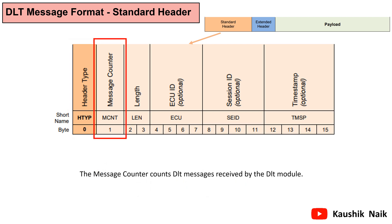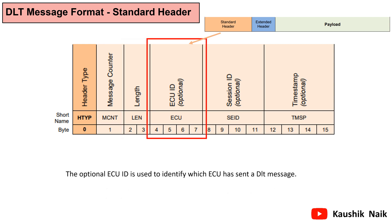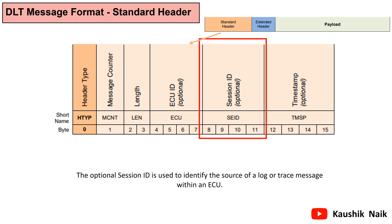The 1st byte of the standard header is the message counter, which counts the number of DLT messages received by the DLT module. The 2nd and 3rd bytes contain the overall length of the DLT message, which includes the standard header, extended header, and complete payload. The 4th to 7th bytes contain the ECU ID, used to identify which ECU sent that particular DLT message. This is an optional section enabled or disabled via bit 2 of the header type. The 8th to 11th bytes contain the session ID, used to identify the source of the log or trace message within an ECU, enabled or disabled via bit 3 of the header type.